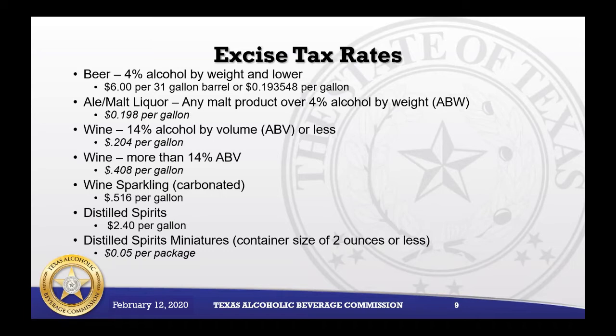Wine at 14% alcohol by volume or less is calculated at a rate of $0.408 per gallon. Sparkling or carbonated wine is calculated at a rate of $0.516 per gallon. Distilled spirits is calculated at a rate of $2.40 per gallon. Distilled spirit miniatures with a container size of two ounces or less are calculated at $0.05 per package.